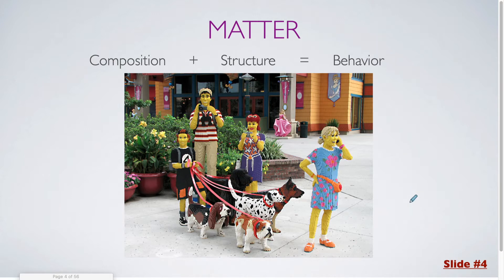So if you consider the picture that we have here, all of the people or animals within this photo are composed of Lego blocks. Depending on what color block you have, what size, and how you put it together, which would be the structure, you end up with different behaviors. So you have a pack of dogs, you have a young boy holding the leash for the dogs, a father and mother with a camera, or a sister with a cell phone.